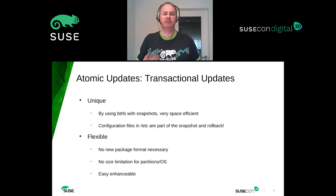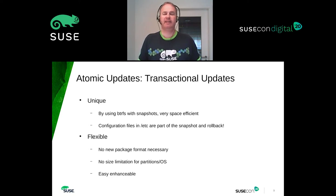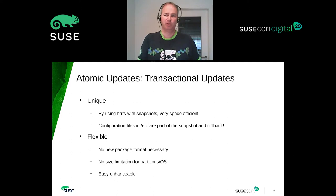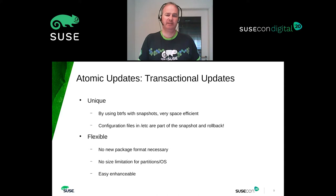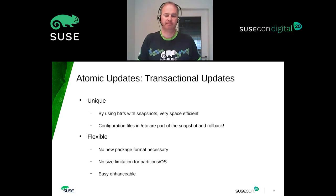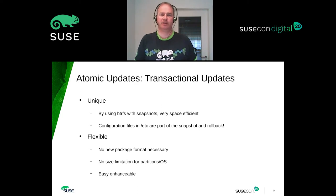We use BTRFS and snapshots for the implementation of atomic updates. It's very space efficient — we don't have two partitions with the full system between which you switch, but only store the difference of the last update on disk. It also has the advantage that the full root file system is read-only, not like in most cases where the root file system is read-write and only the user partitions are read-only. We also include /etc in the snapshot and rollback process.